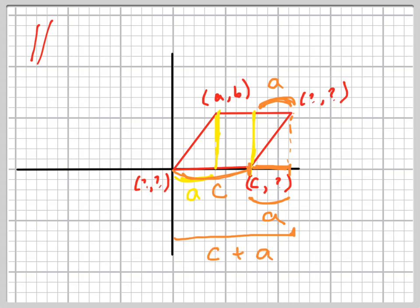So what's this value right here? C plus A. That's your X coordinate, C plus A.